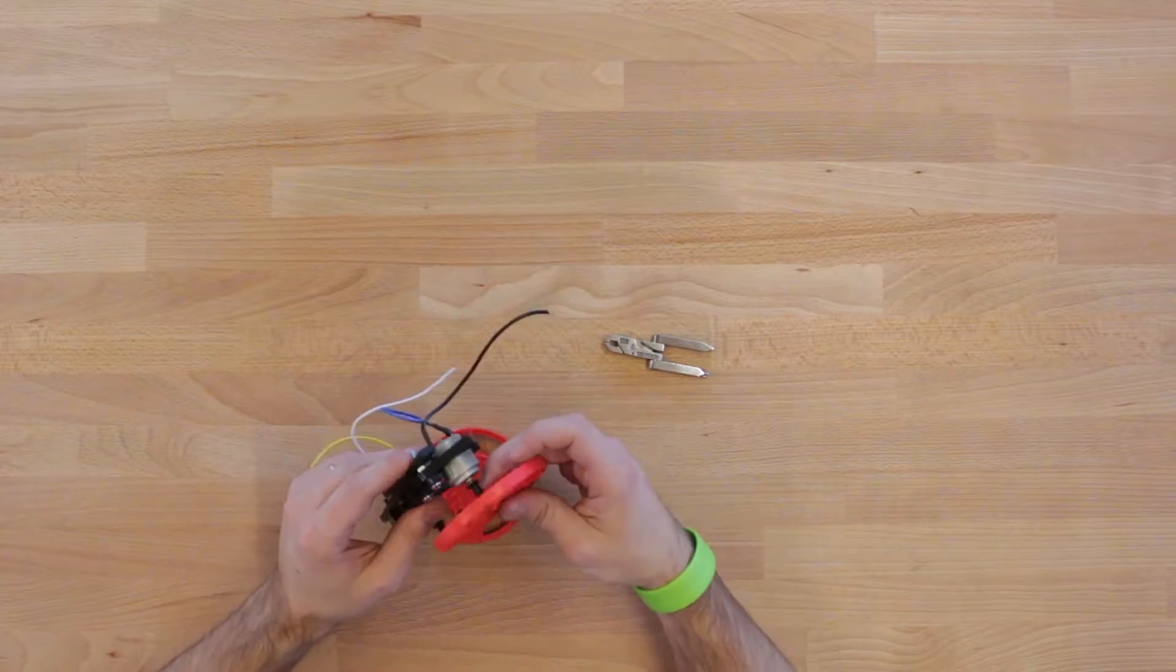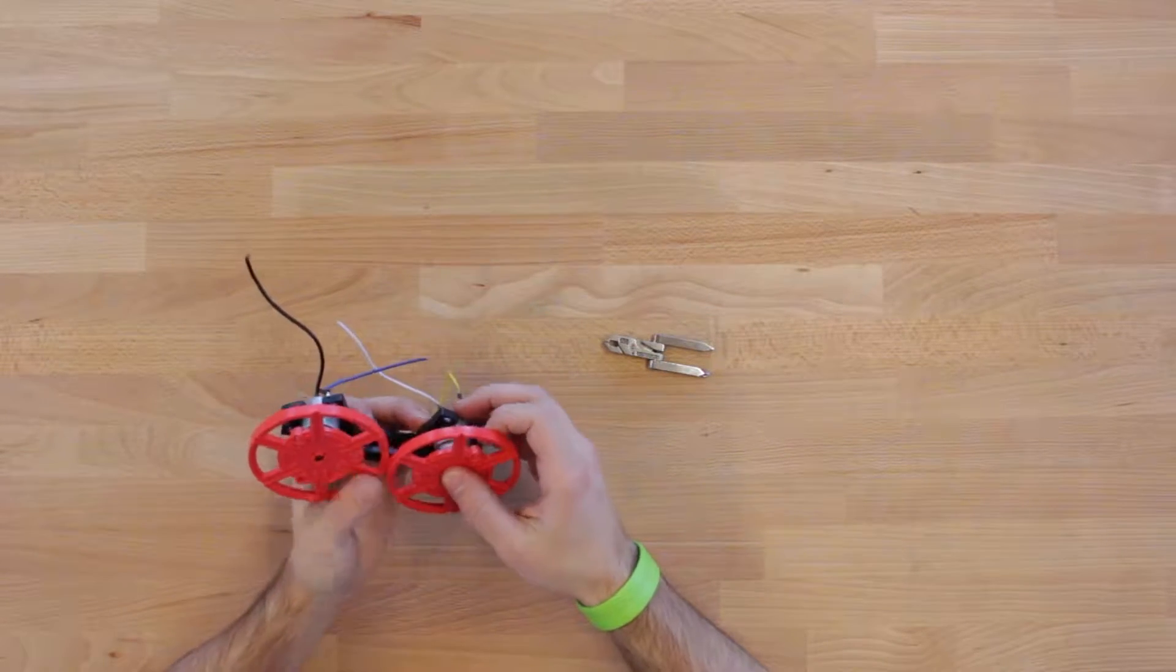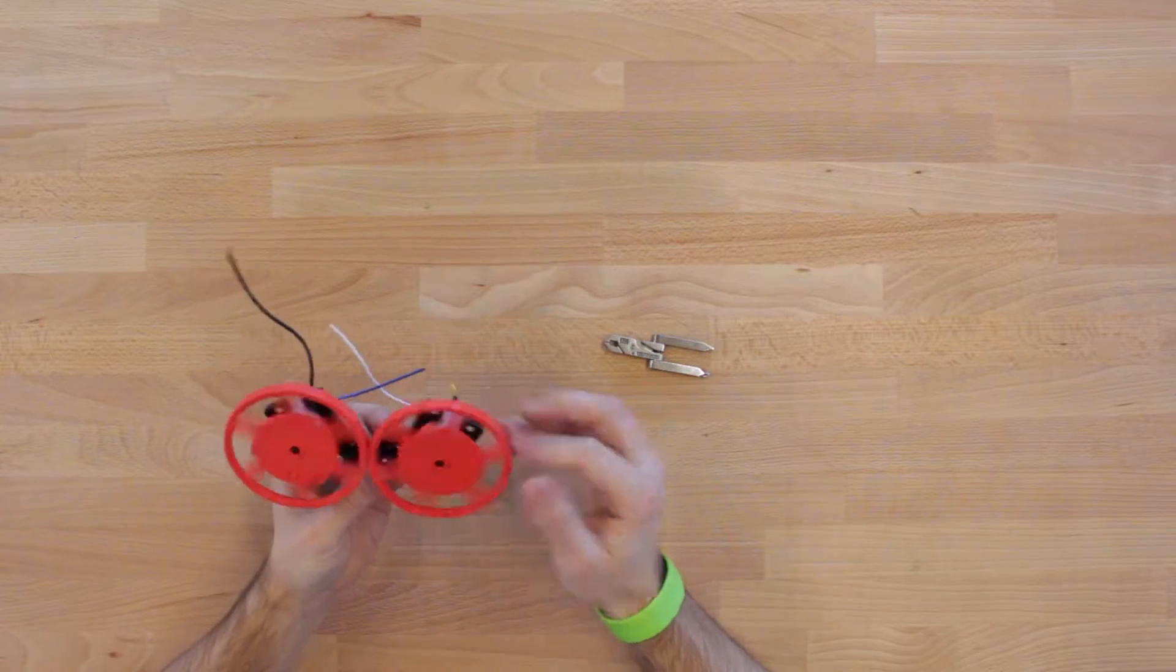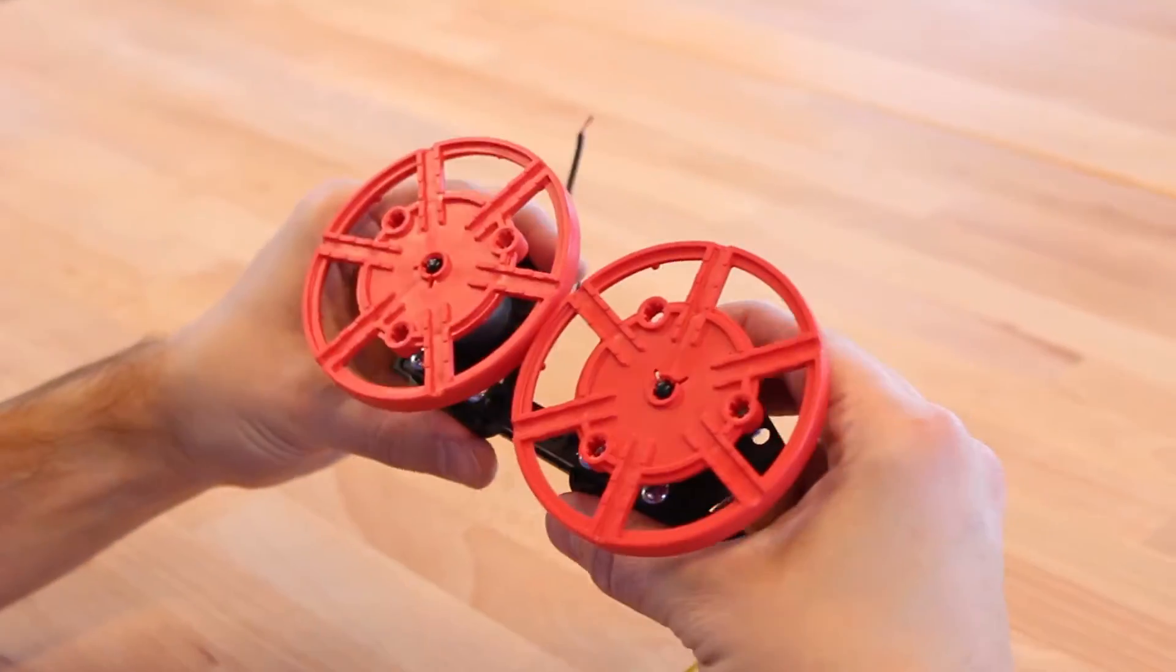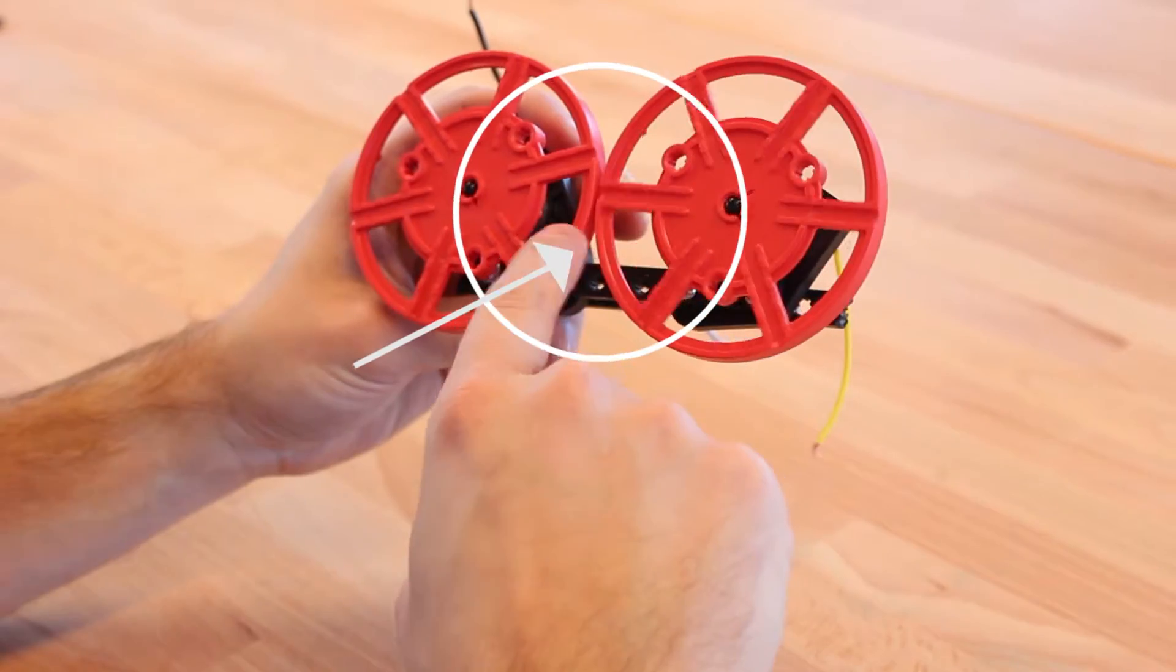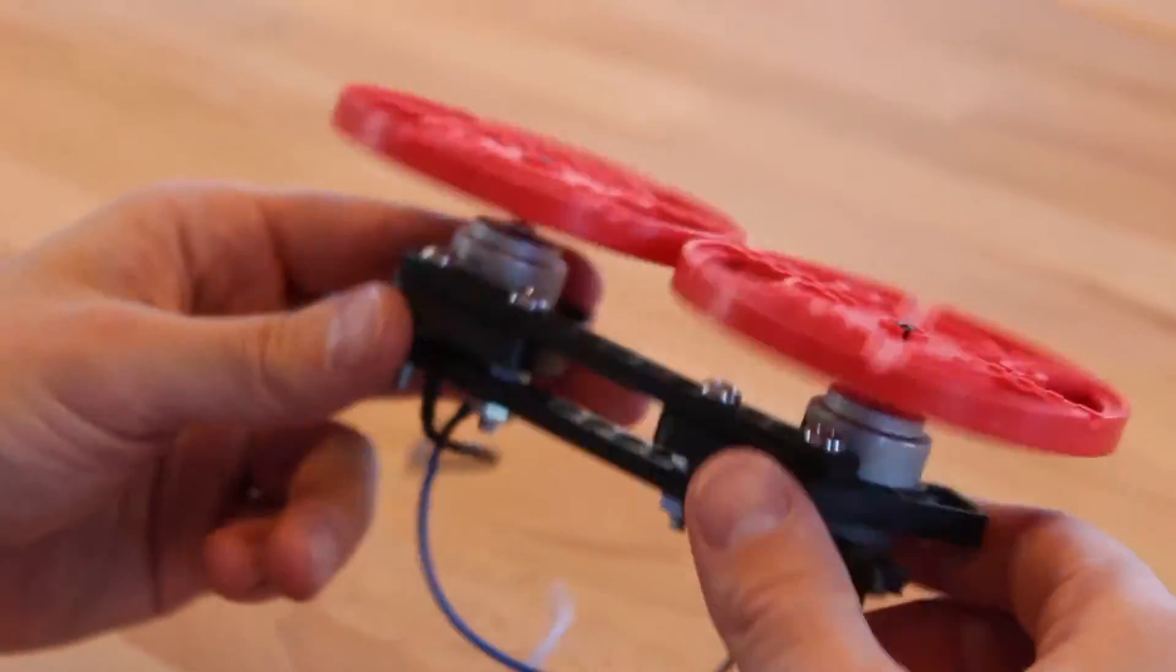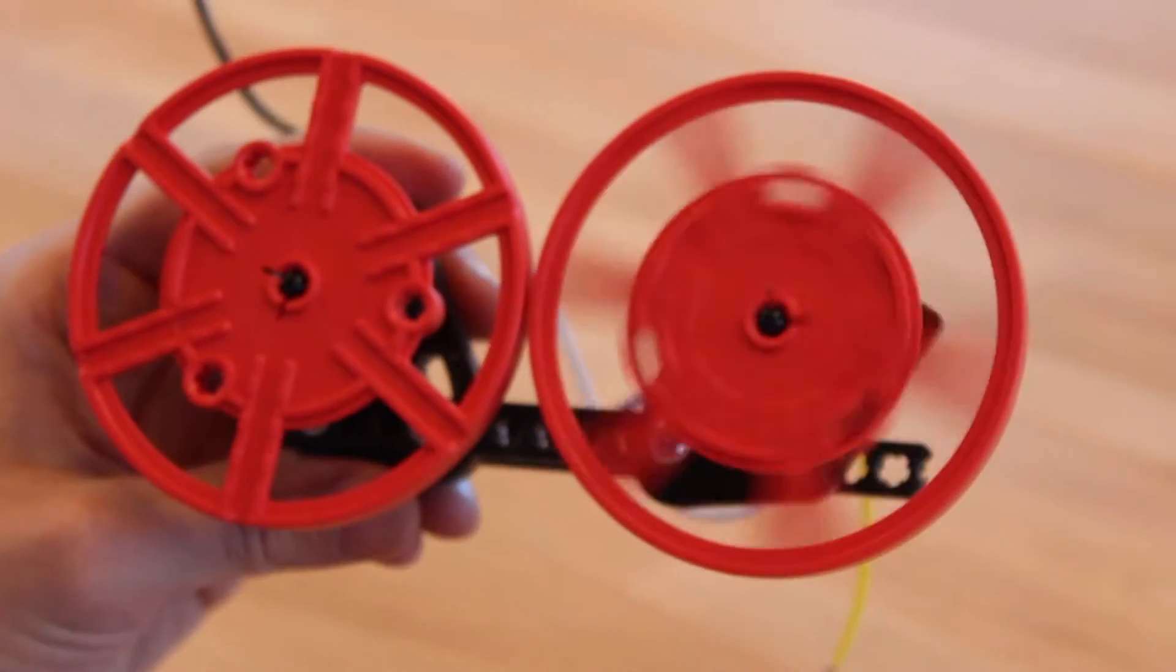Next, we can go ahead and push the wheels on the motor shafts. You may have to pivot the motor mounts out in order to get both wheels on. Once you get both wheels on, pivot them so that there is a small gap between the wheels. Remember, they should be hard to pivot, so you may need an adult's help.